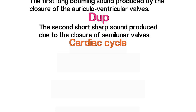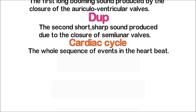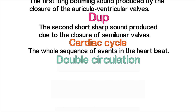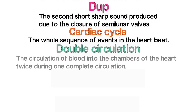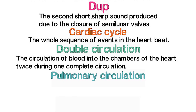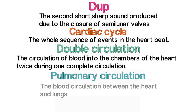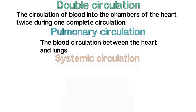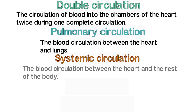Cardiac cycle is the whole sequence of events in the heartbeat. Double circulation is the circulation of blood into the chambers of the heart twice during one complete circulation. Pulmonary circulation is the blood circulation between the heart and lungs, arising from the right ventricle and ending in the left auricle. Systemic circulation is the blood circulation between the heart and the rest of the body, arising from the left ventricle and ending in the right auricle.